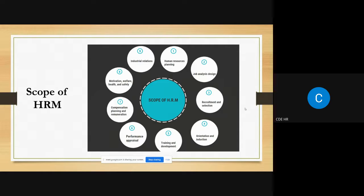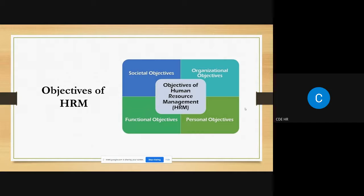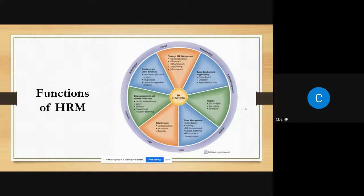Moving to objectives, a student shares: organizational objectives include training, hiring, recruitment, talent and management. Personal objectives include wages and salary. The instructor confirms and adds: personal satisfaction of employees is also a personal objective.